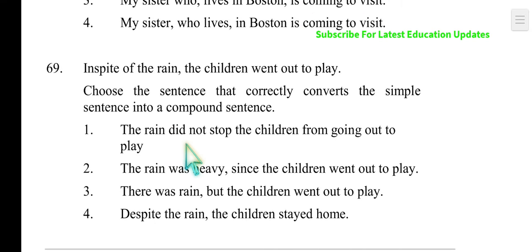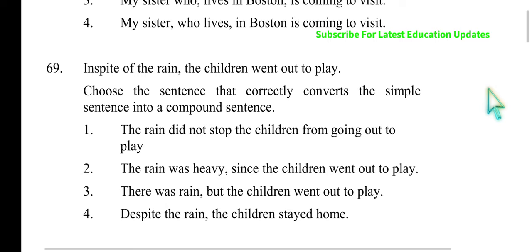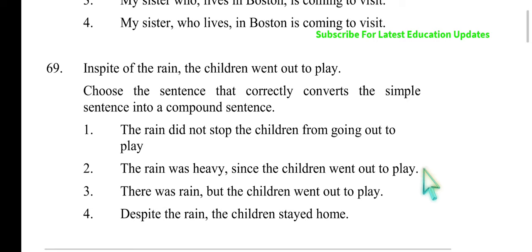Next: 'In spite of the rain, the children went out to play.' Convert this simple sentence into a compound sentence. 'Despite the rain, the children stayed at home' is wrong — option eliminated. 'The rain didn't stop the children from going out to play' doesn't sound natural for a compound sentence and lacks a coordinating conjunction. 'The rain was heavy, since the children went out to play' does not make sense. The correct answer is: 'There was rain, but the children went out to play' — using the coordinating conjunction 'but' to combine two main clauses.